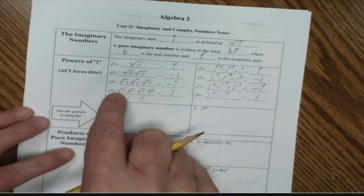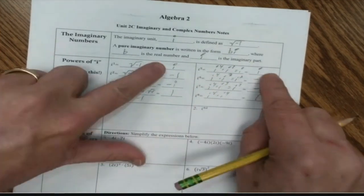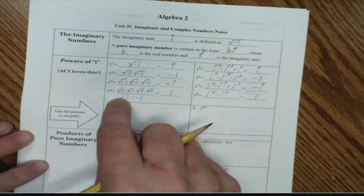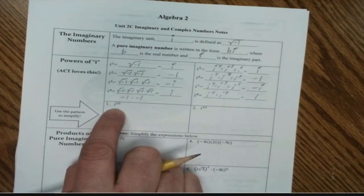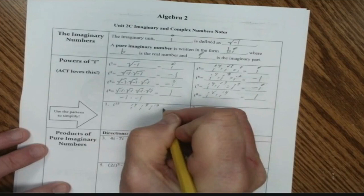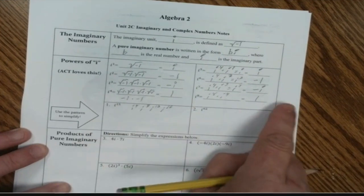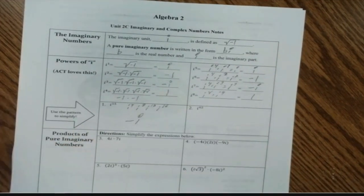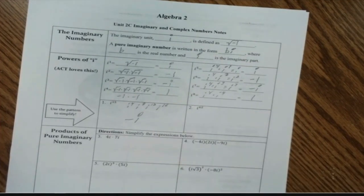Notice the pattern — this is important because the ACT likes to test this. The powers of i cycle through four values: i, negative 1, negative i, and 1. It repeats in multiples of four. For example, i to the 15th: the multiples of 4 are 4, 8, 12, 16 — so i to the 15th is one less than i to the 16th, which means it equals negative i, the same result as i to the third.